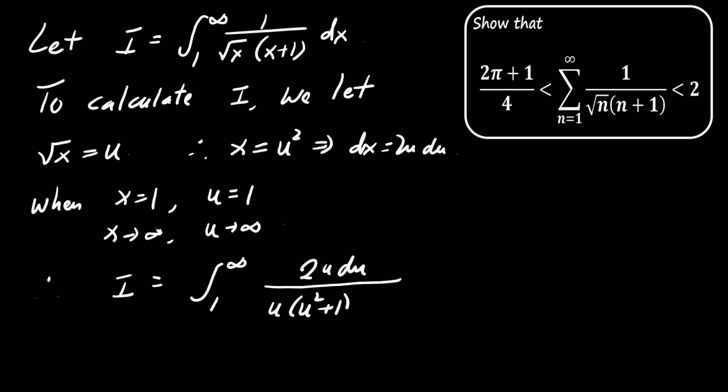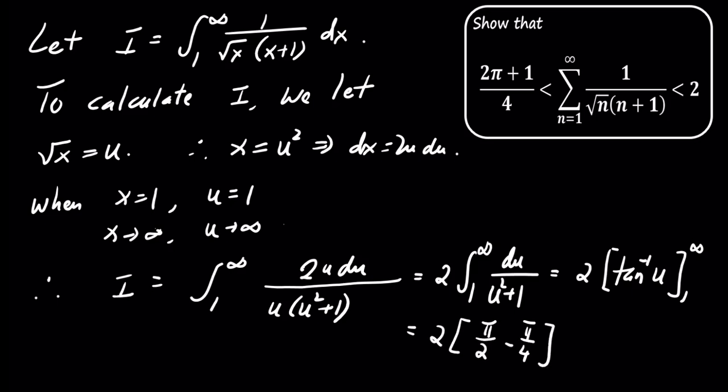Substitute into the integral to get the integral of 2u divided by u times u squared plus 1, with respect to u. After simplifying, this becomes 2 times the inverse tangent of u, evaluated from 1 to infinity. The result is 2 times pi over 2 minus pi over 4. Thus, the integral evaluates to pi over 2, providing a lower bound.